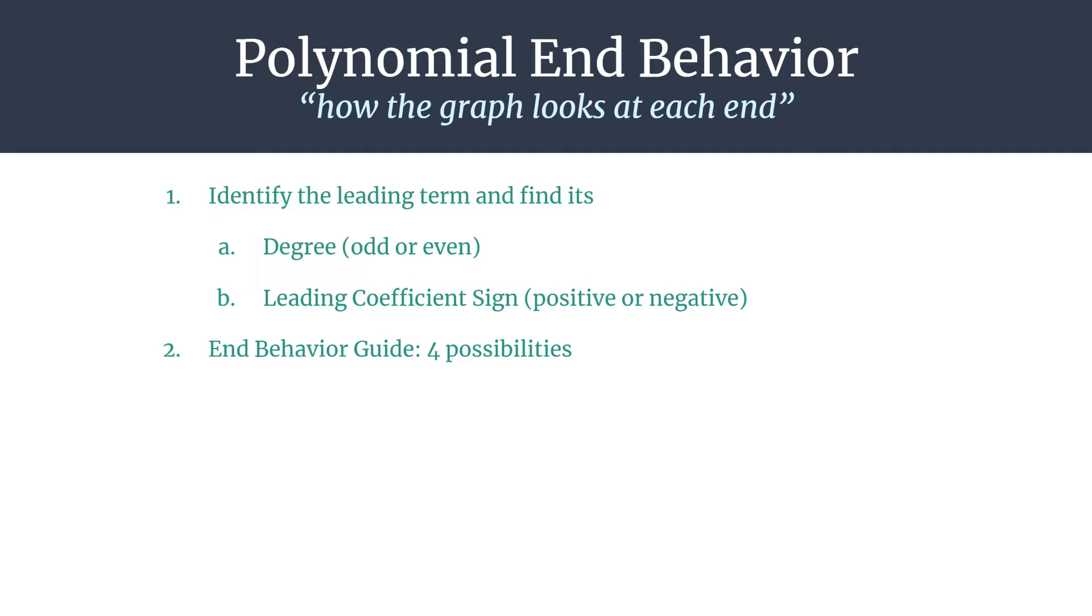So here's a quick end behavior guide. There are four possibilities or four different combinations of these characteristics lining up, and this chart should help summarize it.